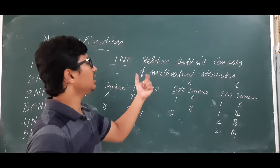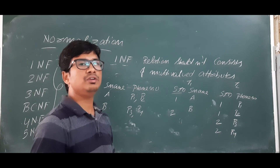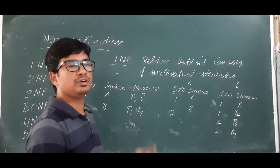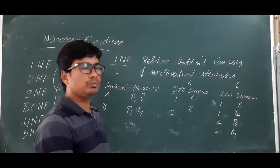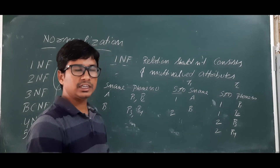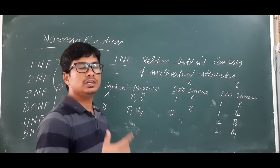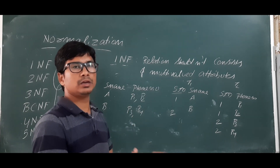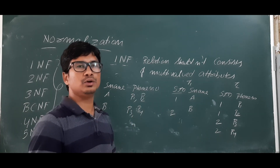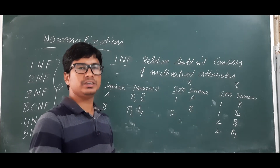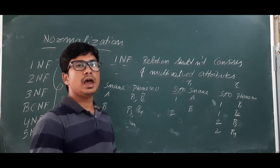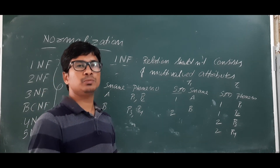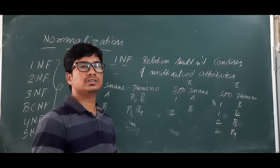So, for a relation to be in 1NF it should not consist of multi-valued attributes. I hope you have understood the different types of normal forms and about 1NF. In the next video I will discuss the Second Normal Form. If you have any doubts, please ask in the comment section. Please share the videos with your friends and subscribe to my channel for regular updates. Thank you so much.